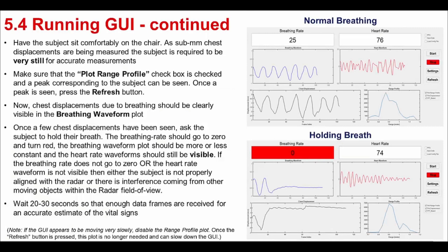Now we are ready to take some measurements with the GUI. Have the subject sit comfortably on the chair in front of the sensor with the sensor pointing towards their chest. As we are measuring very small chest vibrations, the subject is required to be very still for accurate measurements. Make sure that the plot range profile checkbox is checked and a peak corresponding to the subject can be seen in the range profile plot. Once a peak is seen, press the refresh button. Chest displacements due to breathing should now be clearly visible in the breathing waveform plot. Once a few chest displacements have been seen, ask the subject to hold their breath. The breathing rate should go to zero and turn red, the breathing waveform plot should be more or less constant, and the heart rate waveforms should still be visible. If this does not happen, then either the subject is not properly aligned with the radar or there is interference from other moving objects within the radar field of view. Note that you will need to wait for 20 to 30 seconds so that enough data frames are received for an accurate estimate of the vital signs.